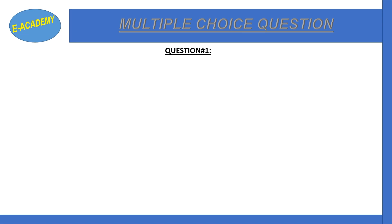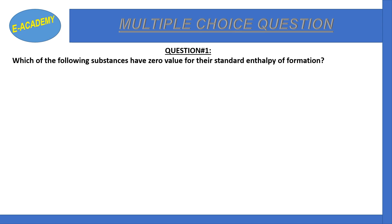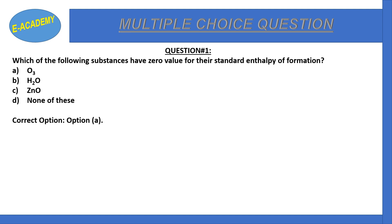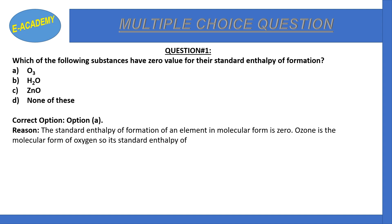MCQ number one: Which of the following substances has zero value for their standard enthalpy of formation? The correct option is A. The standard enthalpy of formation of an element in its molecular form is zero. O3 is the molecular form of the oxygen atom, so its standard enthalpy of formation is zero.